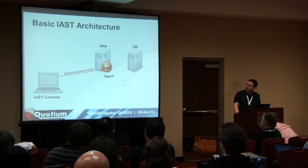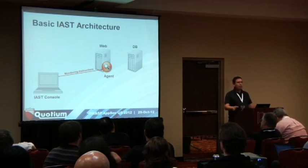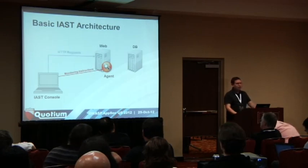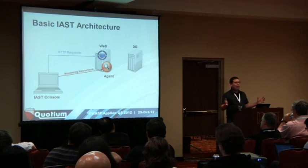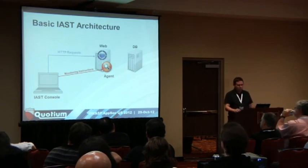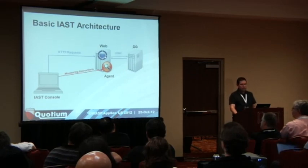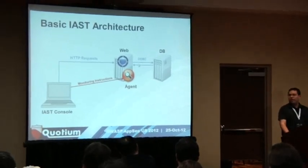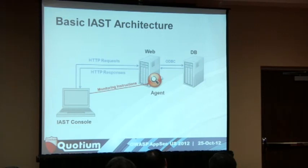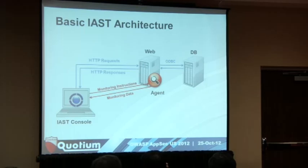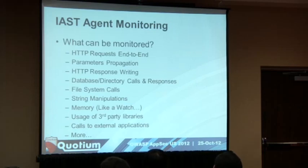The IAST console normally tells the agent it's about to start sending requests and to begin monitoring. An HTTP request is sent and the application processes it transparently - the process doesn't feel it's being monitored. But the agent is looking at everything going on. For instance, if the application sends an ODBC call, the agent can see that. Eventually the application finishes, the agent collects all runtime information and sends it back to the IAST console, which processes and correlates it with the response.